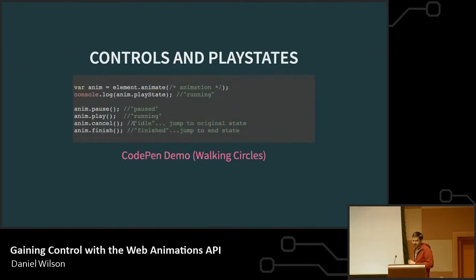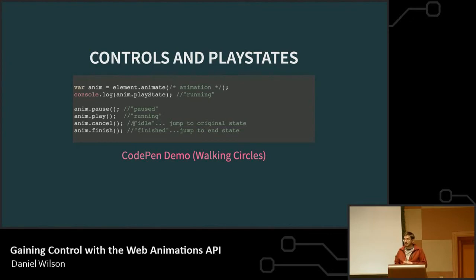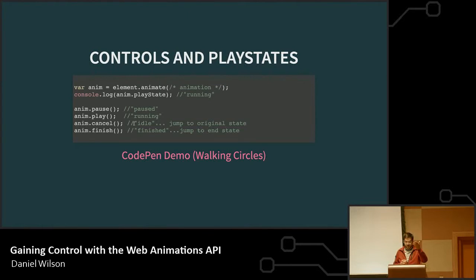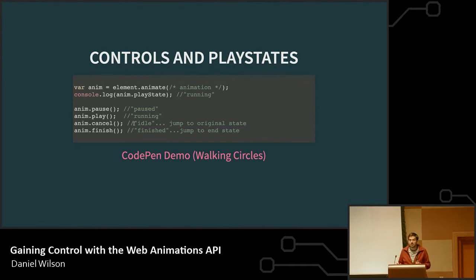Let's talk about some of the options you can perform on an animation once you have it. If you do element.animate(), you can call playState on it and see if it's running, paused, idle, or finished. You also have methods to change that state — if you want to pause it, call pause, then check animation.playState and you'll get back a string saying it's paused. So you've got some hook-ins to affect other parts of your website or application based on these states.